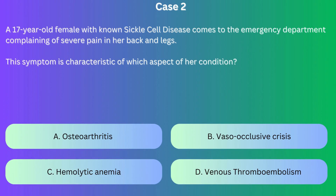Correct answer: B. The severe pain in her back and legs is indicative of a vaso-occlusive crisis, a hallmark of sickle cell disease. In this crisis, sickle-shaped red blood cells obstruct capillaries and restrict blood flow, leading to tissue ischemia and infarction. This ischemia is the primary cause of the acute pain episodes seen in sickle cell disease. The pain can be localized to any body region, but is commonly observed in bones due to the bone marrow's high blood flow and susceptibility to sickling under hypoxic conditions.